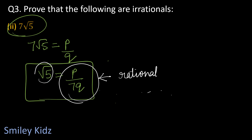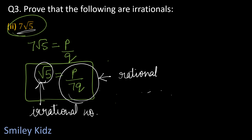But on the LHS, root 5 is an irrational number. This is again a contradiction, arising from the incorrect assumption that 7 root 5 is rational. So we conclude that 7 root 5 is an irrational number.